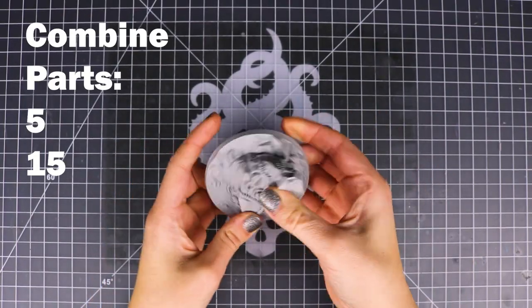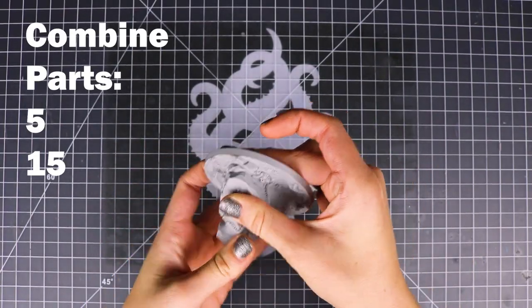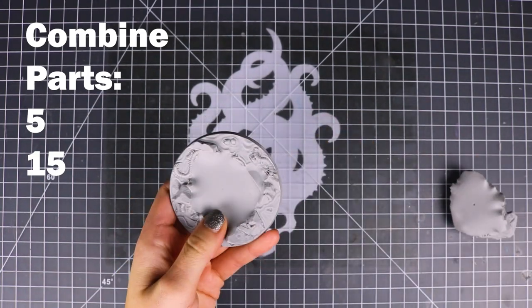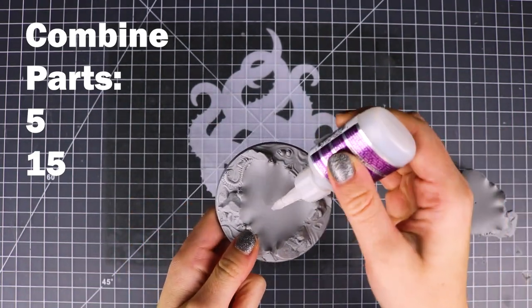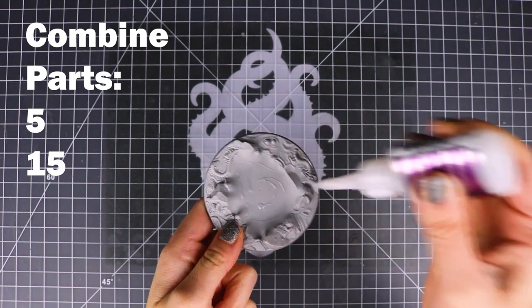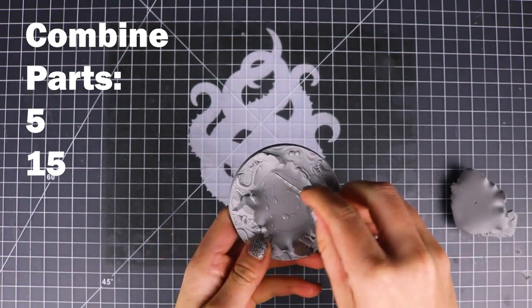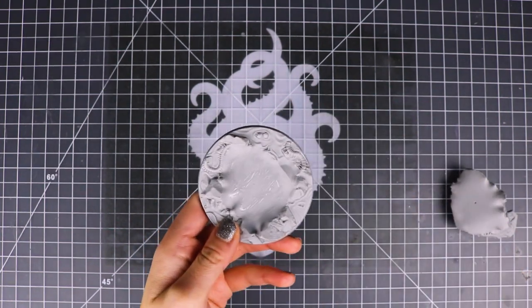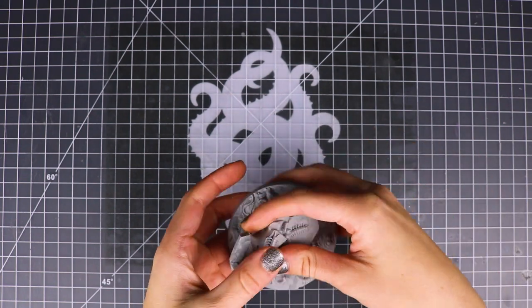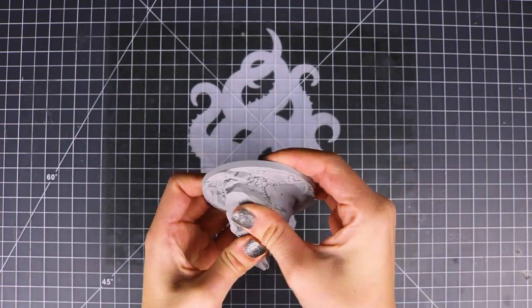So first we're going to start with our base. Give that plenty of time to dry while we're assembling the rest. Be generous with your glue here. You don't really have to spread it because when you push the piece down it will spread it for you, but I always like to do a little bit of spreading so it takes less drying time.